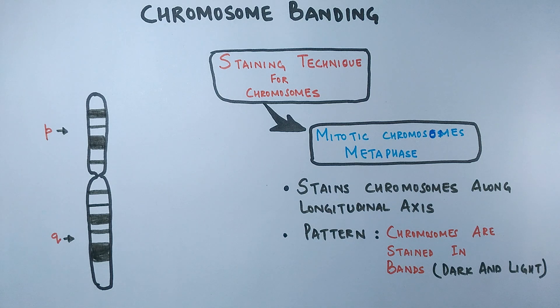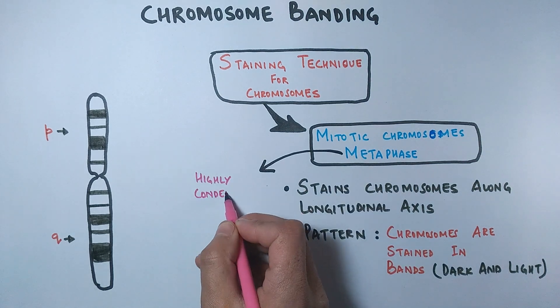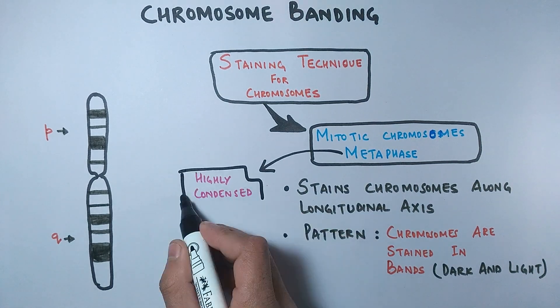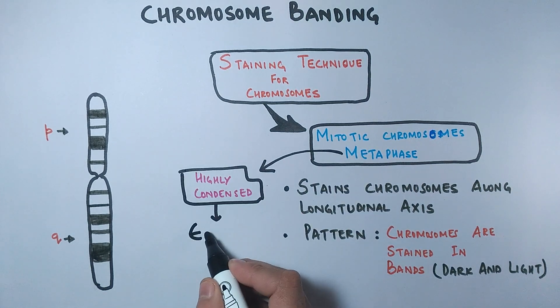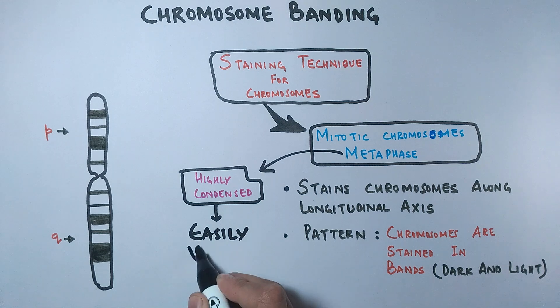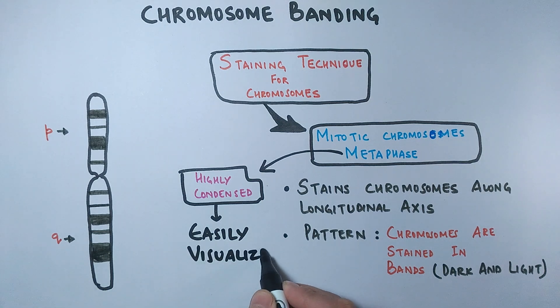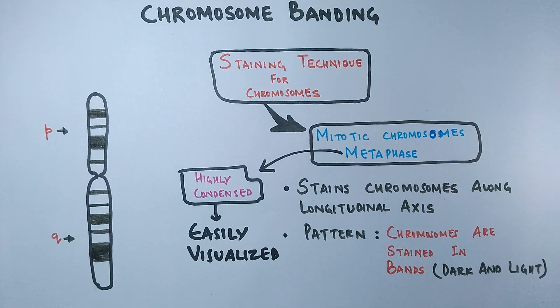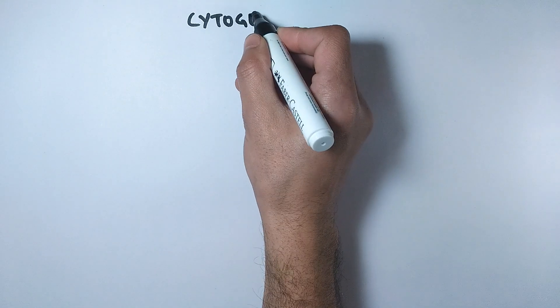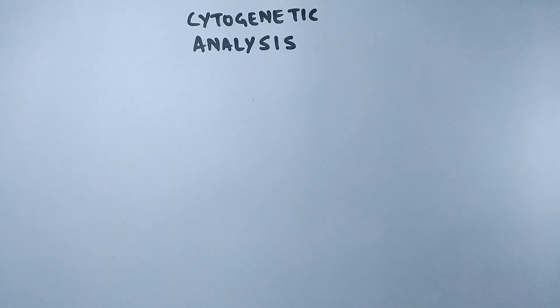The metaphase chromosomes are in a highly condensed form, and that is the reason they are well stained and easily visualized. Chromosome banding is used in cytogenetic analysis.